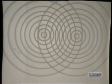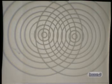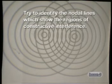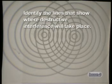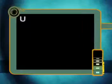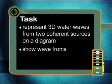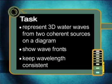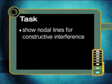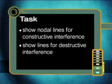For your task today, let's recall the interference pattern formed by two coherent sources of water waves. Your task is to represent these three-dimensional water waves using a diagram, showing the wave fronts from each source radiating outwards. You will need to do a careful construction so that the wavelength of the waves is consistent between the different wave fronts. Then, on your diagram, try to identify the nodal lines which show the regions of constructive interference, and also identify the lines that show where destructive interference will take place.